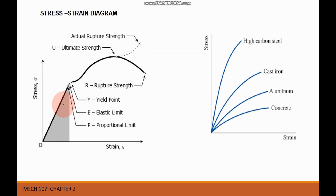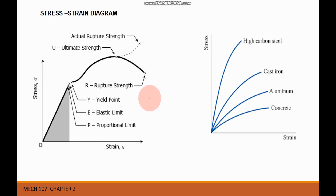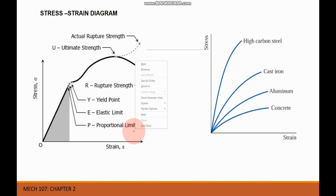Next is the stress and strain diagram. Hooke postulated that stress is proportional to strain, and the linear relation between stress and strain can be seen up to the proportional limit. Beyond this point, stress is no longer proportional to strain. The proportional limit is important because all subsequent theory involving elastic bodies is based on stress-strain proportionality, placing an upper limit on usable stress.